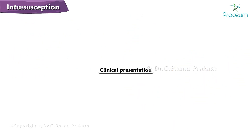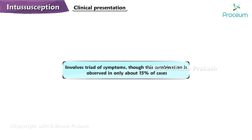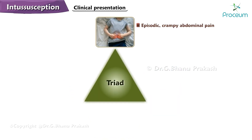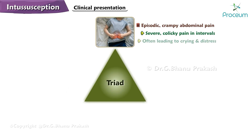The classic manifestation of intussusception involves a triad of symptoms, though this combination is observed in only about 15% of cases. The first symptom is episodic, crampy abdominal pain — the child experiences severe, colicky abdominal pain at intervals, often leading to crying and distress.